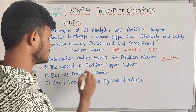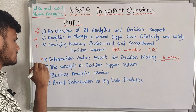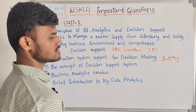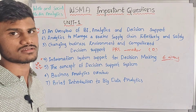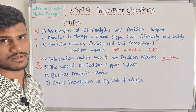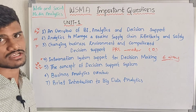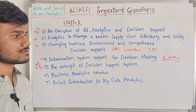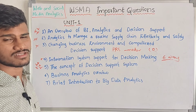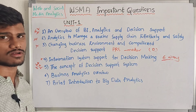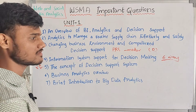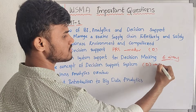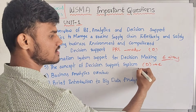Next, the concepts of decision support system. This is a very important question. I will explain three types — Structure, Semi-Structure, Unstructure. So, if you need differences in table form, it will be easy to draw. And then, draw the diagram and draw the components. Explain all three types: Structured, Semi-Structured, and Unstructured.